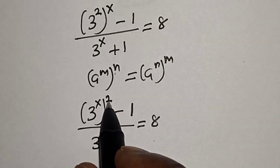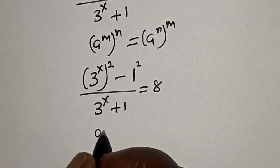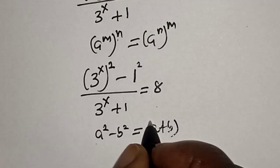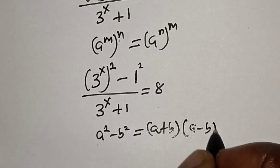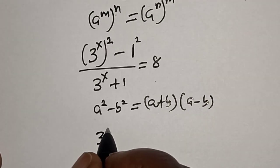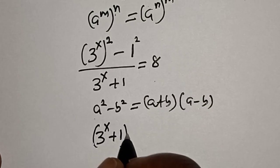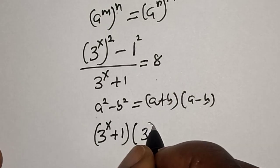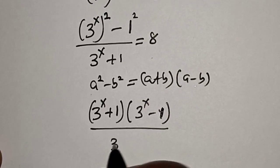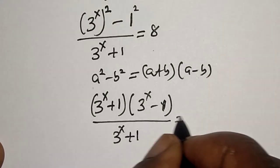Now, x squared minus 1 is a difference of squares, where this is x squared and this one is 1 squared. Remember the rule that a squared minus b squared is equal to (a plus b)(a minus b). So we replace the numerator: 3 raised to power x plus 1 multiplied by 3 raised to power x minus 1, divided by 3 raised to power x plus 1, is equal to 8.